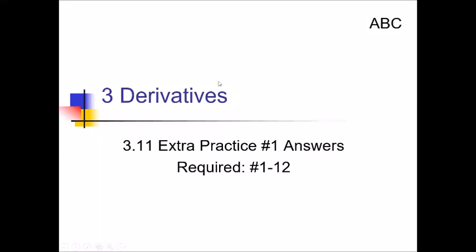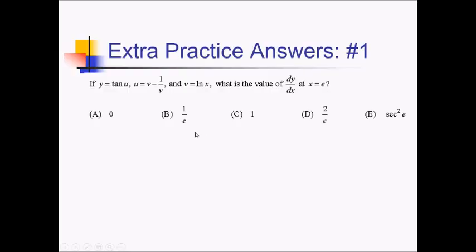Hey there, Mr. Sutton here with the AB Calculus 311 Extra Practice Number 1 solutions on derivatives of logarithmic functions. For this first problem, we've got y equaling the tan of u, u equaling v minus 1 over v, and v equaling ln of x. We want the derivative dy/dx at x equals e. Our first task is to write the original function in terms of x and y, since that's what our derivative is involving.